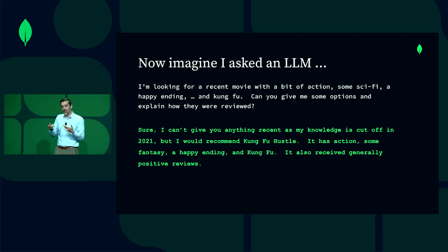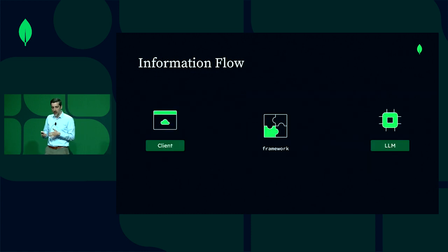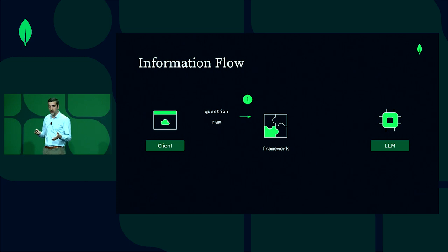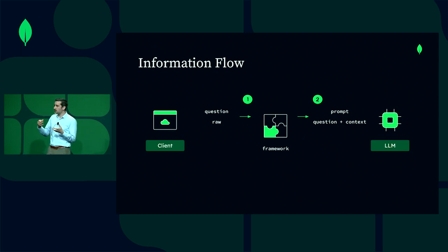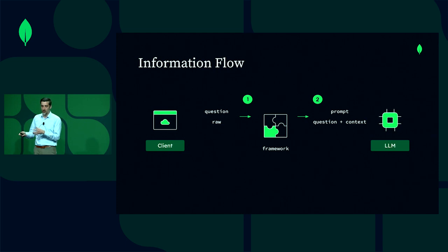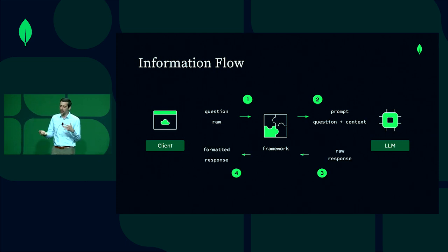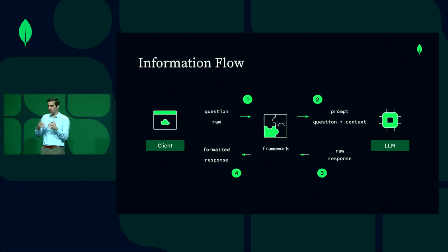The way this would end up looking inside of your application is: you would take your client, submit your question to a framework — maybe something like Langchain or LlamaIndex — it would take the question you've asked, maybe add some additional context, create a prompt, and send that to the large language model, which would then respond with a raw response that you might do some post-processing on and get back to the client. This is what the experience of using ChatGPT looks like today.